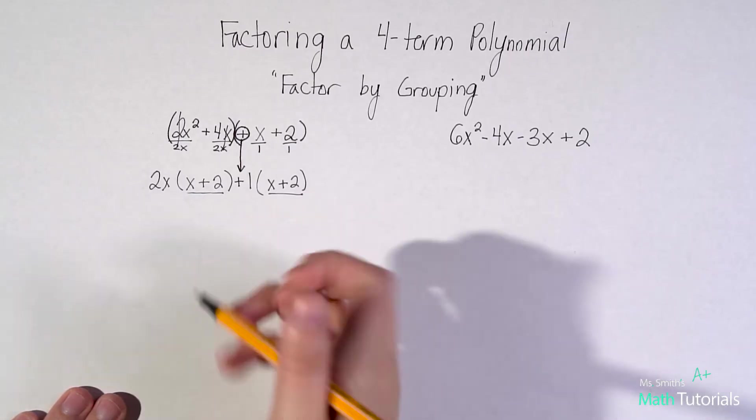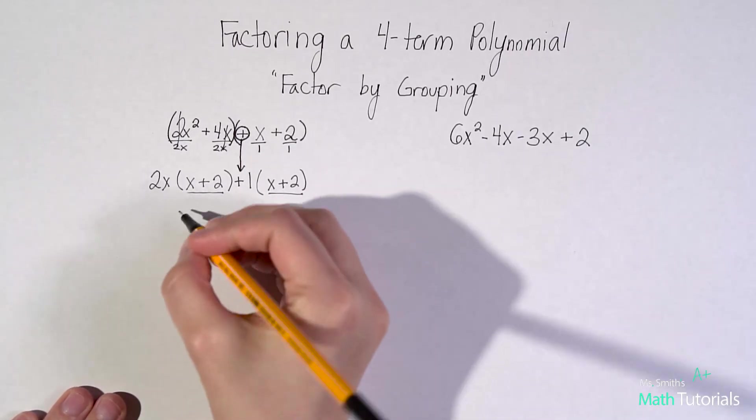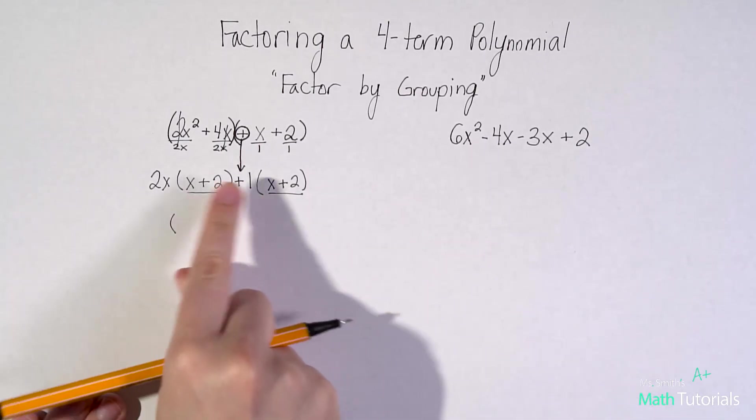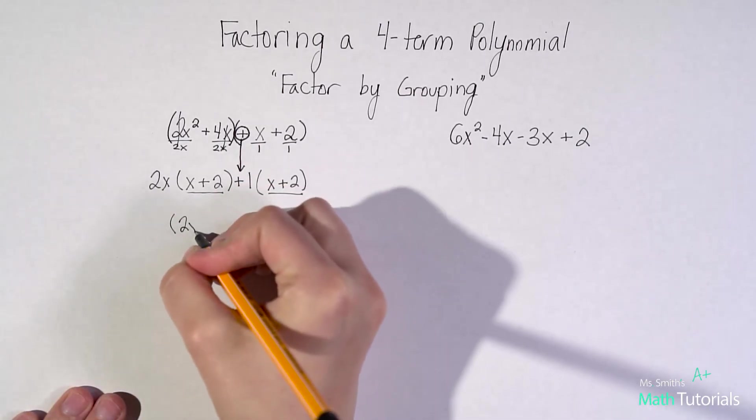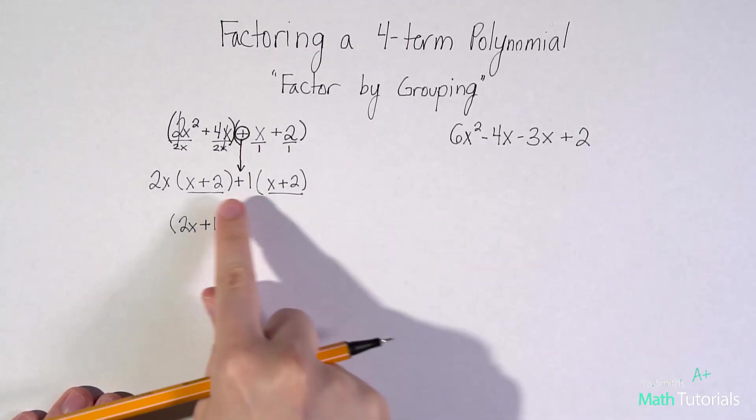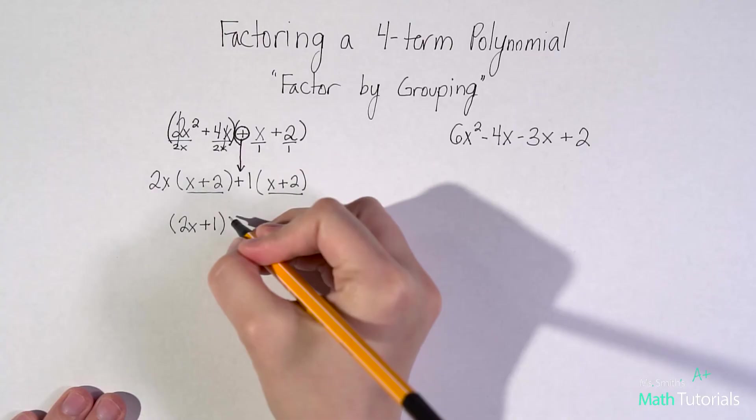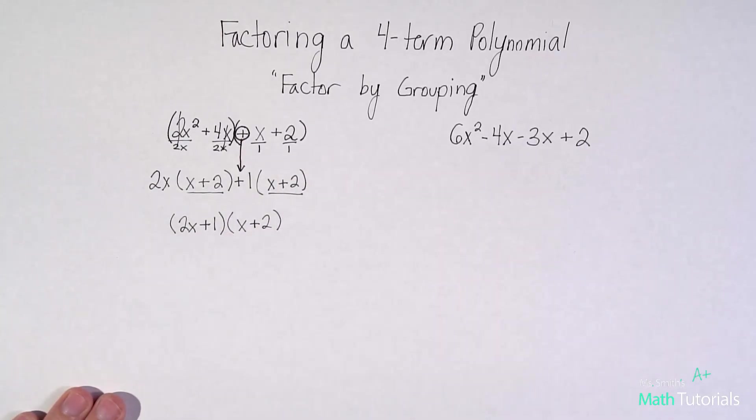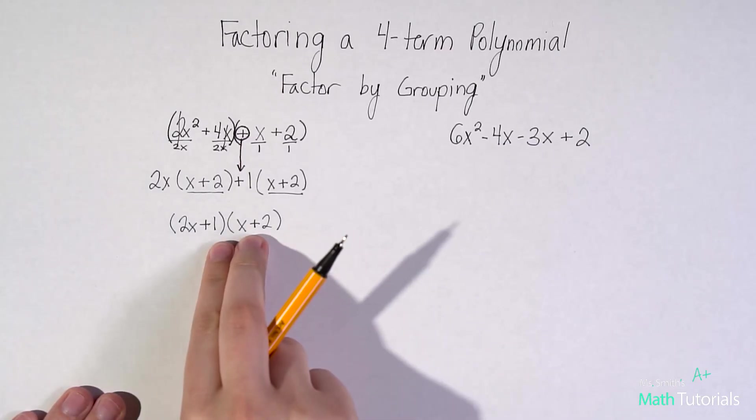So my last step here is I'm going to write what I have in front of the parentheses. Group those two together. So the 2x and the plus 1. Write those together. Pull out one twin. I only need one. x plus 2. And that's it. We have factored by grouping.